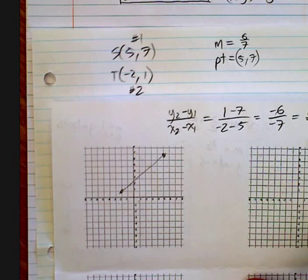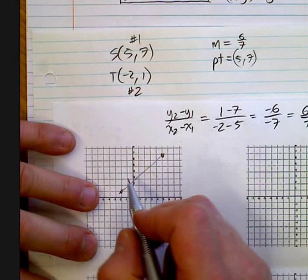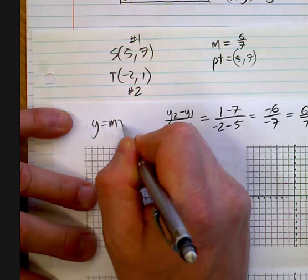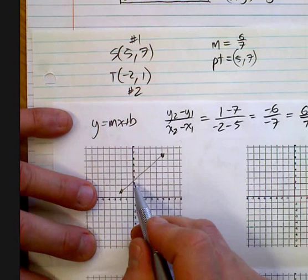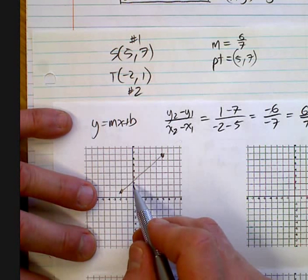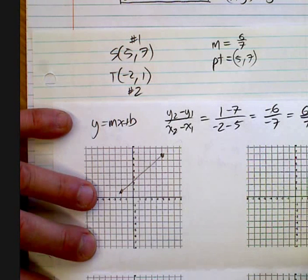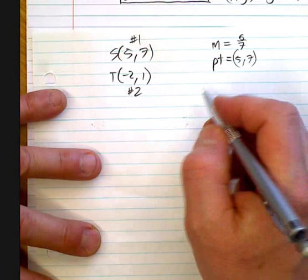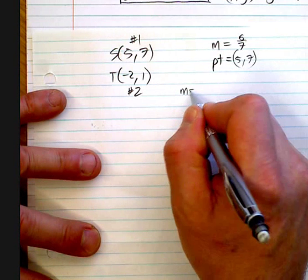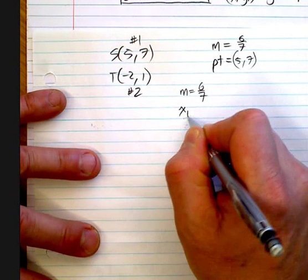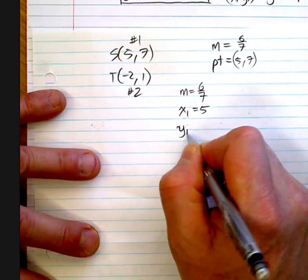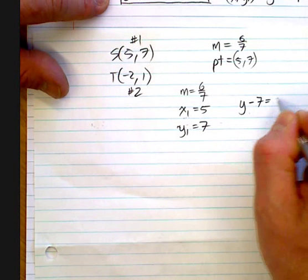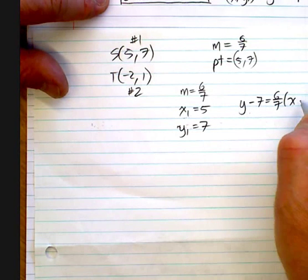So now we have the slope. If you had the y-intercept, you could write out the equation in slope-intercept form right now. But since we don't, we need to use this point-slope formula. So m equals 6 sevenths, x1 equals 5, and y1 equals 7. We plug them in: y minus 7 equals 6 sevenths times x minus 5.